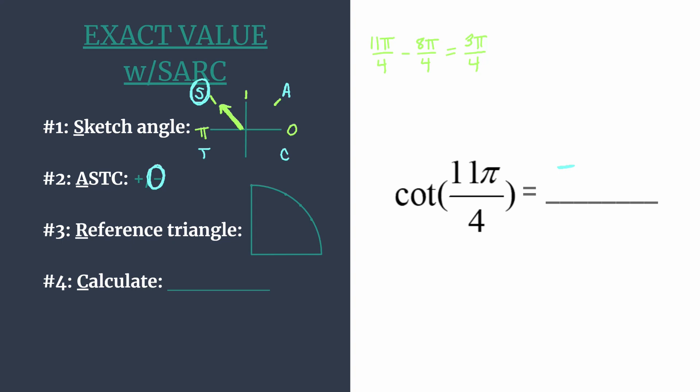Now we can work in the first quadrant — we'll find our reference angle, then draw out our special right triangle and coordinates. The reference angle is just the amount of rotation from the terminal side to the x-axis. We rotated 3 pi over 4; if you rewrite pi as 4 pi over 4, you can easily see that from 3 pi over 4 to 4 pi over 4 is just 1 pi over 4, which is the same as 45 degrees. So the special right triangle is a 45-45-90, and the coordinates that go with it are square root of 2 over 2 for both x and y.